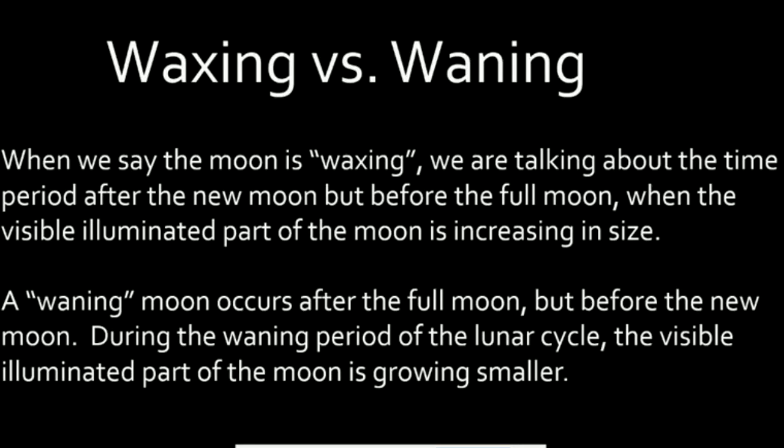How about the difference between waxing and waning? When we say that the moon is waxing, we are talking about the time period after the new moon but before the full moon, when the visible illuminated part of the moon is increasing in size. A waning moon occurs after the full moon but before the new moon. During the waning period of the lunar cycle, the visible illuminated part of the moon is growing smaller.